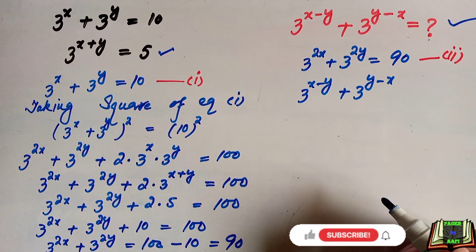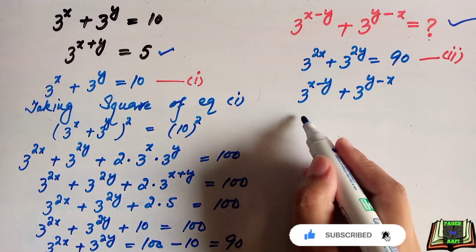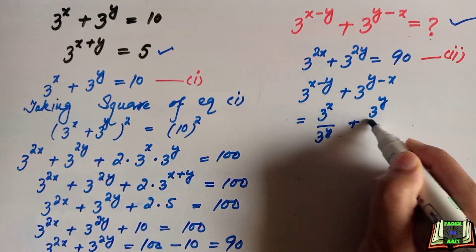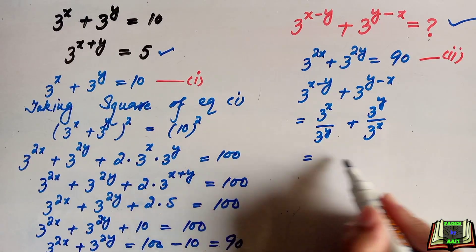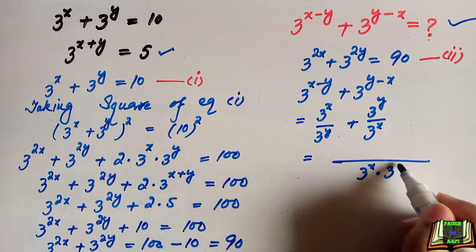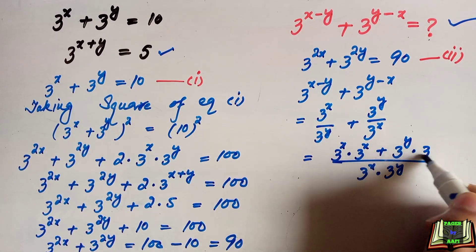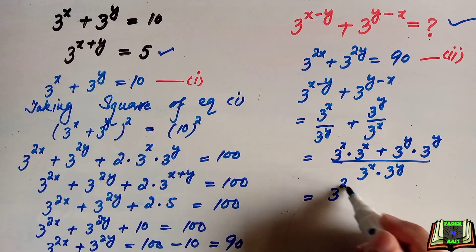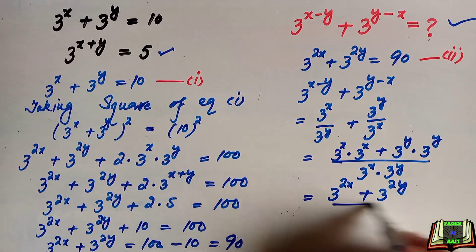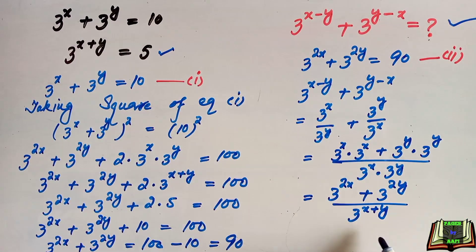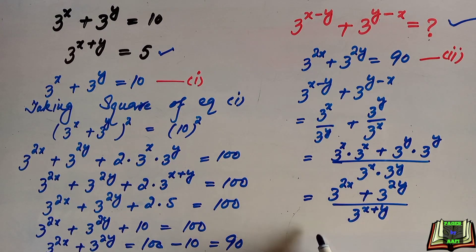We can write 3 to the power x minus y as 3 to the power x divided by 3 to the power y, using the quotient rule of exponents. Similarly, 3 to the power y minus x equals 3 to the power y divided by 3 to the power x. Taking LCM, the denominator is 3 to the power x times 3 to the power y, and the numerator is 3 to the power x squared plus 3 to the power y squared, which equals 3 to the power 2x plus 3 to the power 2y, all divided by 3 to the power x plus y. We know 3 to the power 2x plus 3 to the power 2y equals 90, and 3 to the power x plus y equals 5. So we get 90 divided by 5, which equals 18.